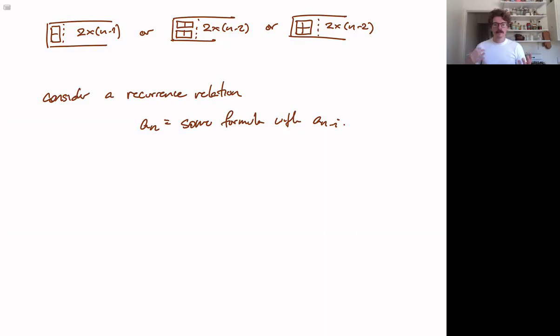So previous terms in the sequence combined in some way. Now there's a lot of ways that you can make such a formula, and not all of them are going to be so easy to solve. So we're going to make some restrictions on the type of recurrence relations we consider. A recurrence relation is called linear if no ai's are multiplied together. So it is linear in the ai in the sense that there are no products between them. They each live in their own terms.